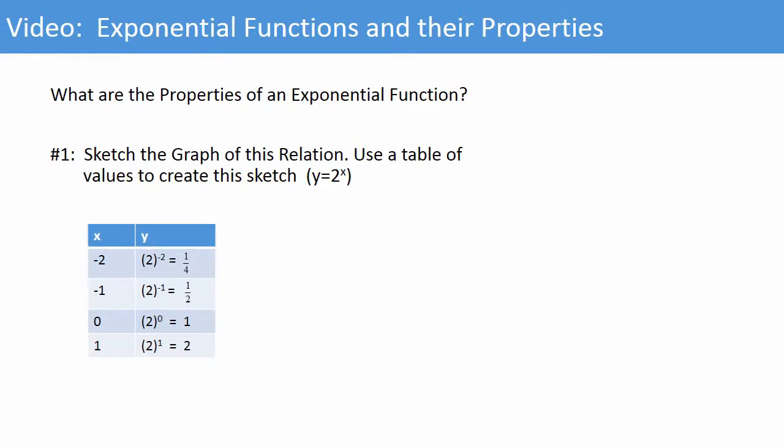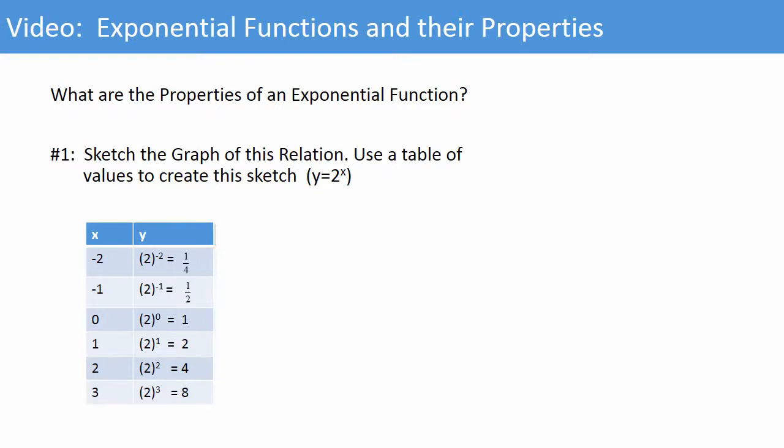Next random value, 1. 2 to the exponent 1 is 2. Let's try x as 2. 2 to the exponent 2 is 4. For 3, 2 to the exponent 3 is 8.